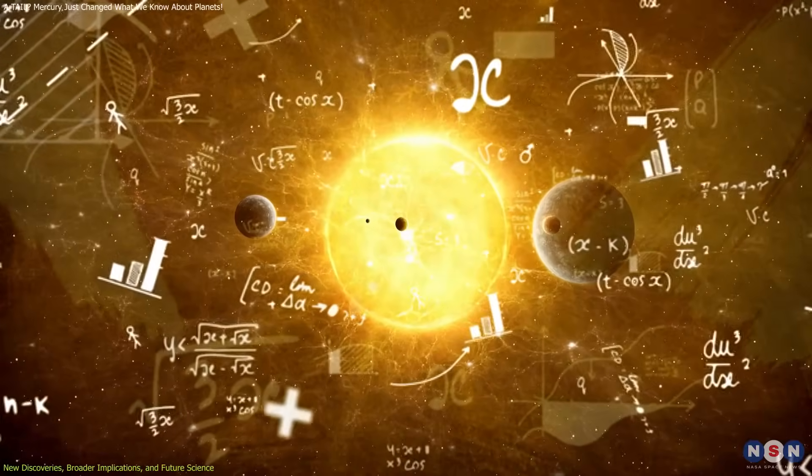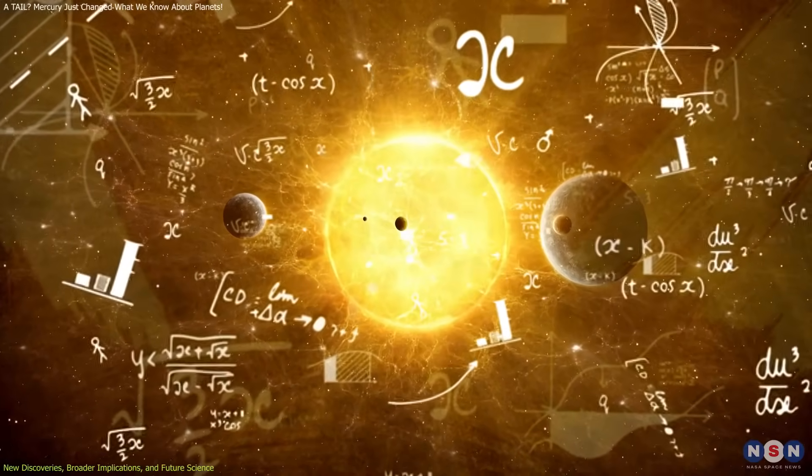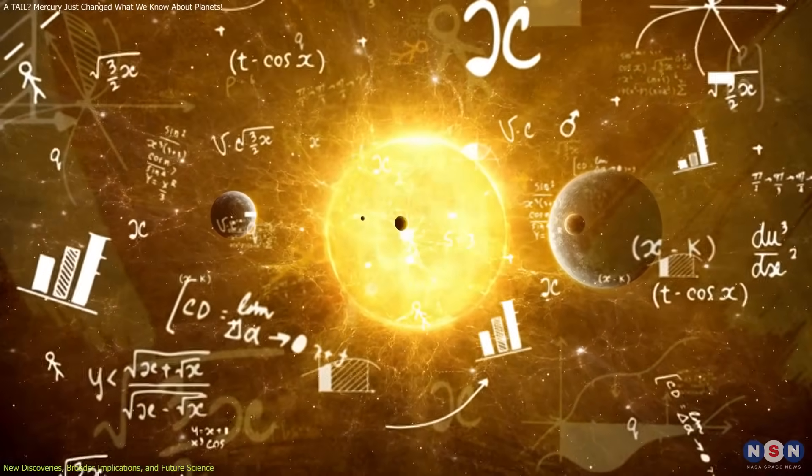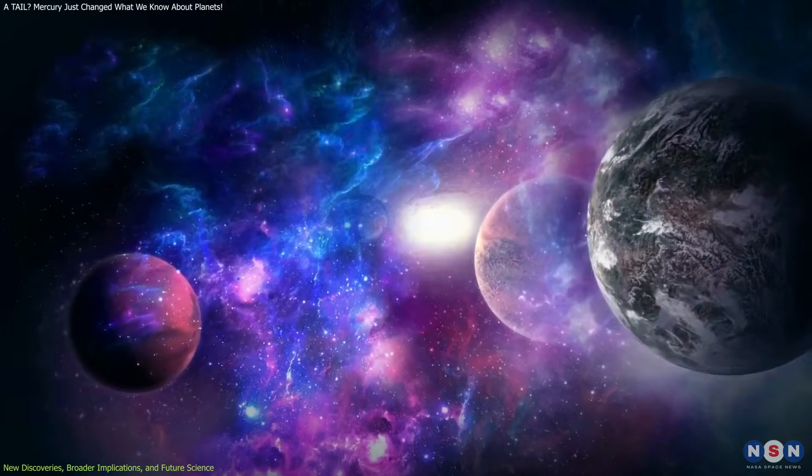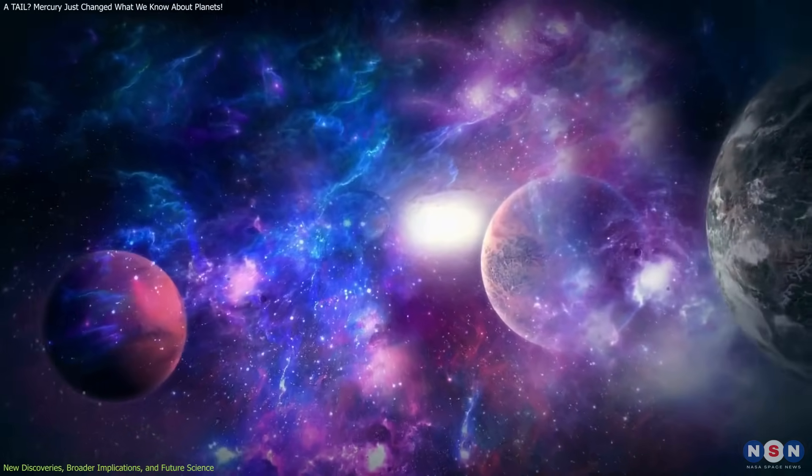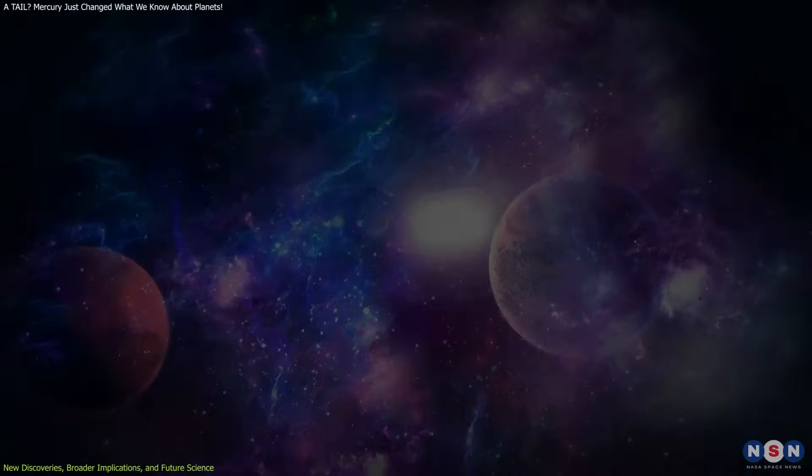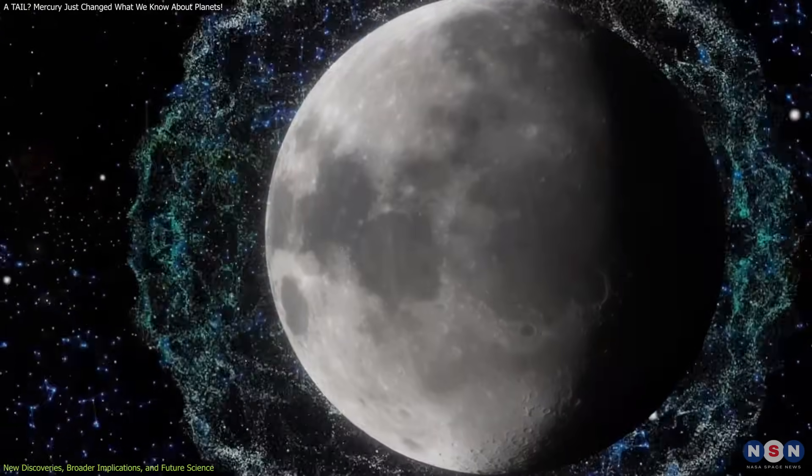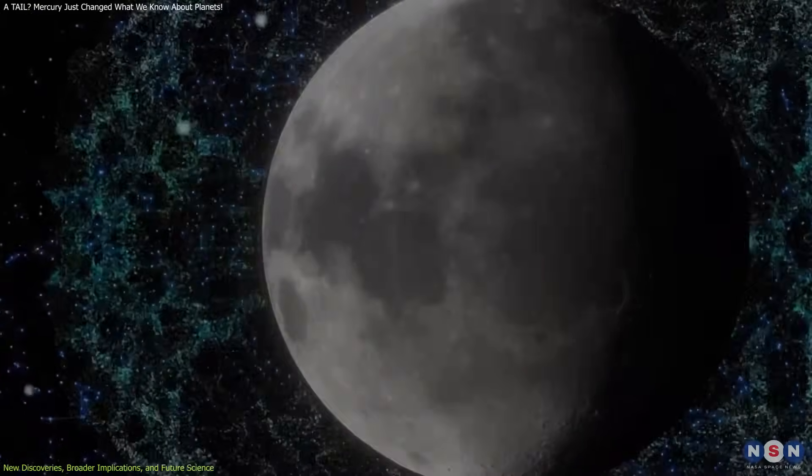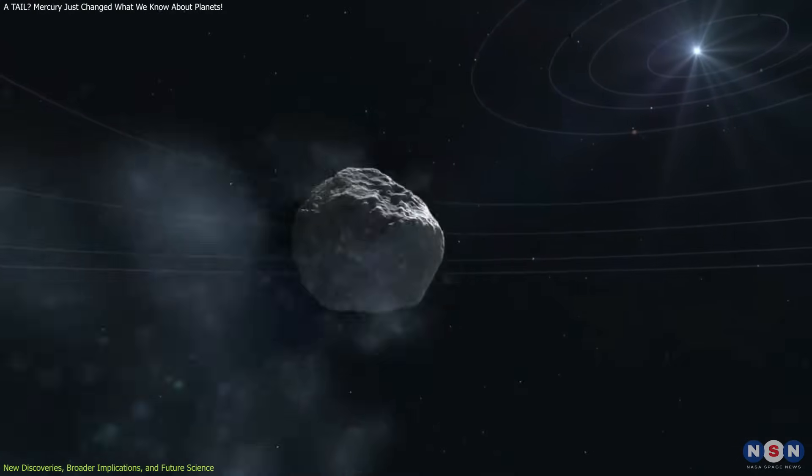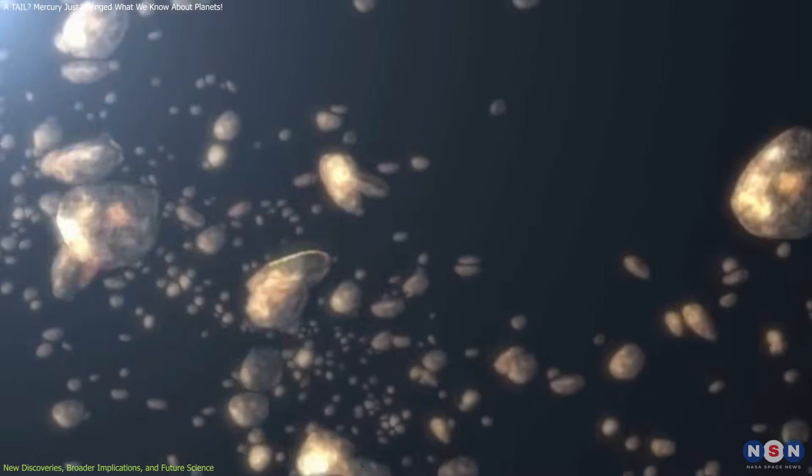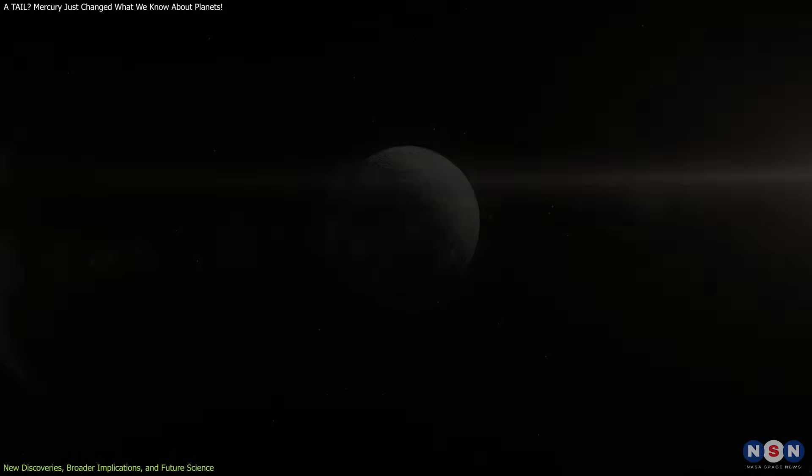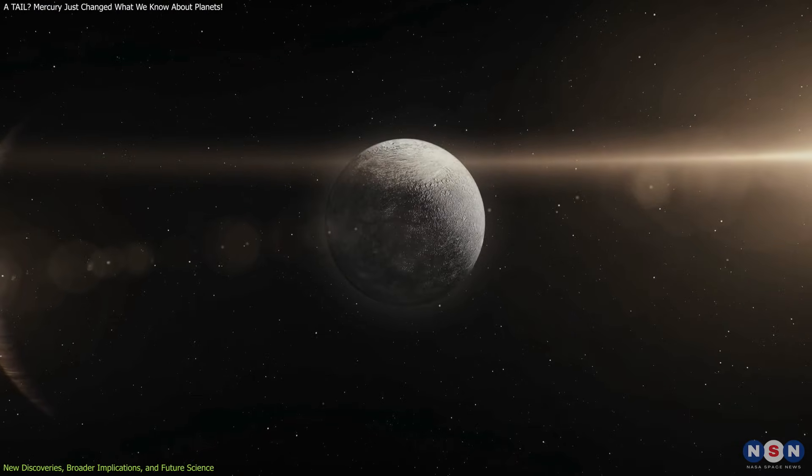These patterns could reveal new physics in the way solar wind interacts with planetary exospheres. Studying Mercury's sodium tail also helps us interpret similar signals from other planetary bodies. For example, when scientists detect sodium or potassium emissions around the moon or certain asteroids, they can better understand what's causing it—thermal desorption, micrometeoroids, or solar wind. Mercury provides a baseline for comparison.